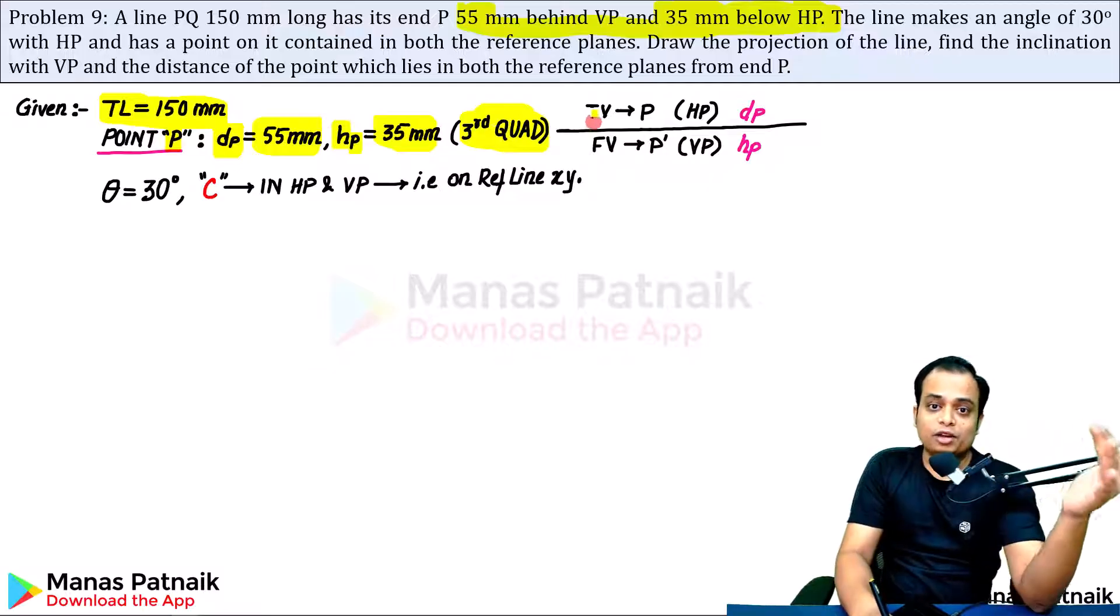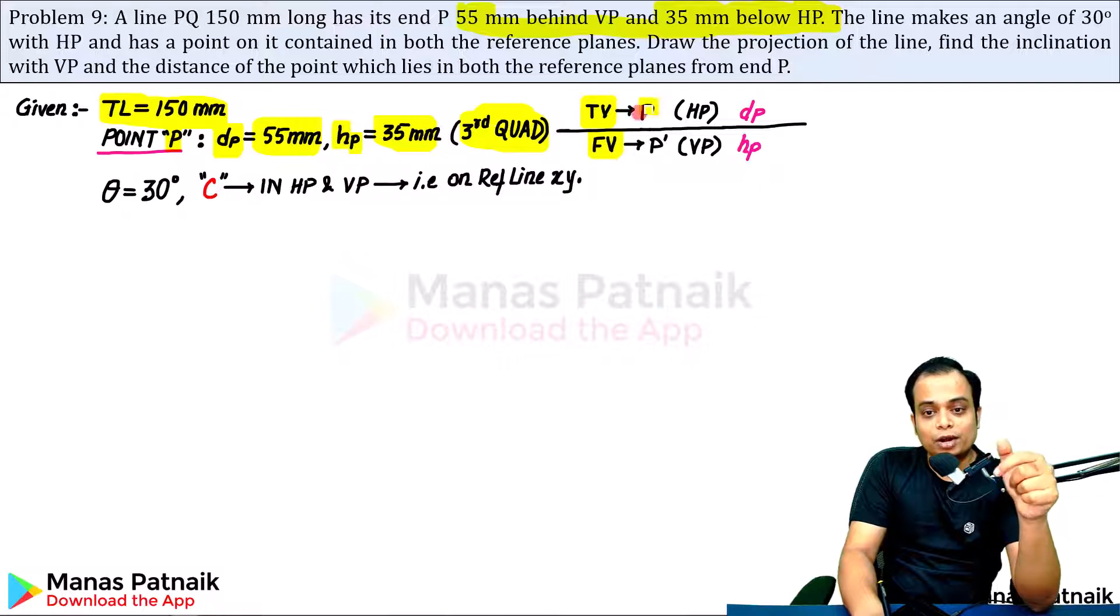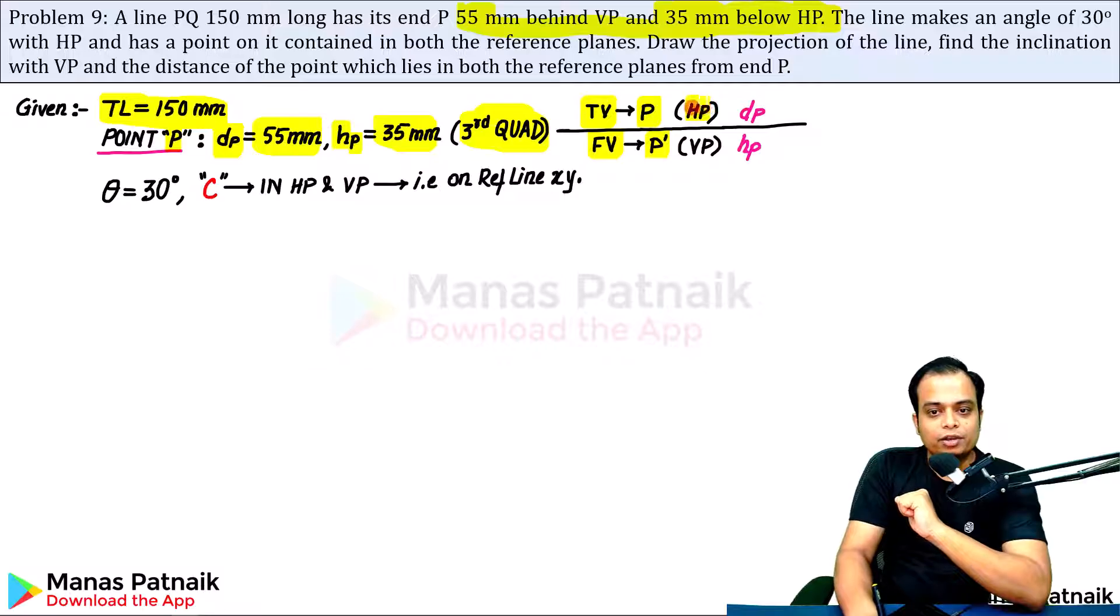Point P is part of the third quadrant. In third quadrant from projection of point concept, we know top view is above, front view is below. If top view is allowed, non-dash will be above XY, dashed will be below XY. For HP and VP, DP will be above, HP will be below.